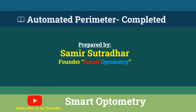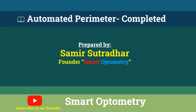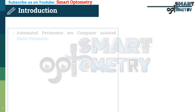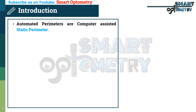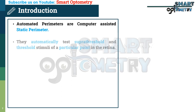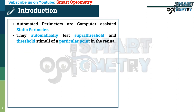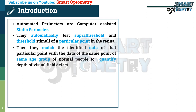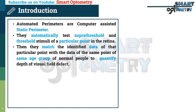Today I will discuss about automated perimeters. Let's start with the introduction. Automated perimeters are computer-assisted static perimeters. They automatically test suprathreshold and threshold stimuli of a particular point in the retina, then match the identified data of that particular point with the data of the same point of the same age group of normal people to quantify depth of visual field defect.